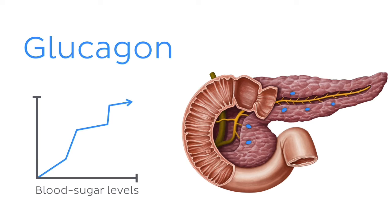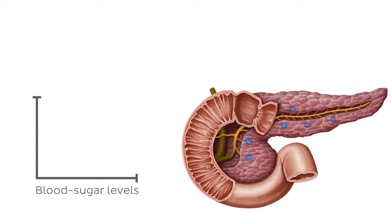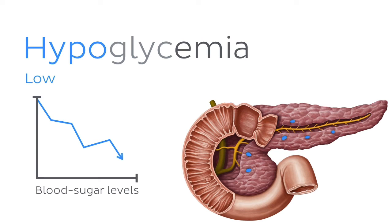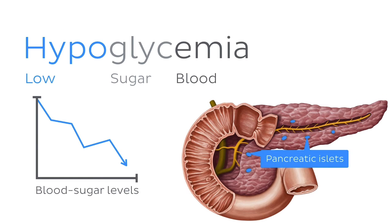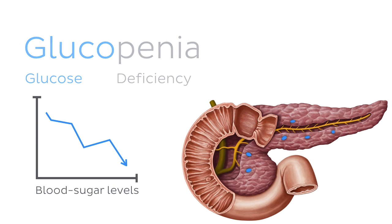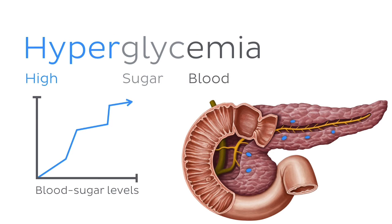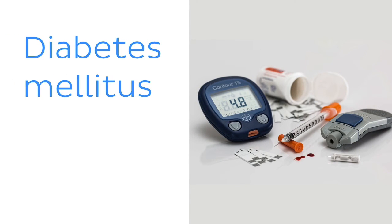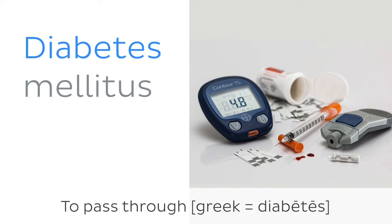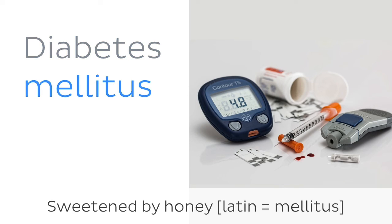Now it is time for us to address some medical conditions associated with the endocrine pancreas. Firstly we have hypoglycemia, which is a term for low blood sugar or blood glucose, regulated by the hormones secreted by the pancreatic islets. It is also sometimes referred to as glucopenia. Hyperglycemia in contrast means high blood sugar. Now of course we can't talk about the endocrine pancreas and not mention diabetes mellitus. It is a condition where, due to ceased production of insulin or inability by cells to react to insulin, glucose is no longer absorbed by cells around the body. The word diabetes comes from the Greek, which means to pass through, and mellitus means sweetened by honey in Latin, referring to excess glucose in blood and urine of diabetic patients.